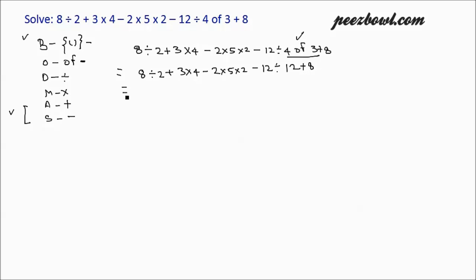Now we will see which operation has the second highest priority in this example. We are done with of. After of, we have division and multiplication; both these operations have equal priority. So when we have two operations which have equal priority, then the process follows from left to right. That is, on the left hand side, which operation comes first will be performed first, and which operation comes later will be performed later.